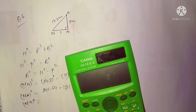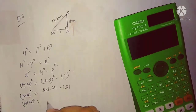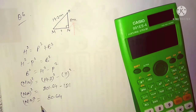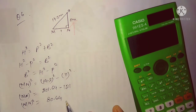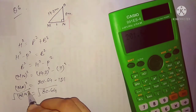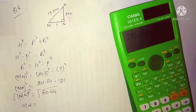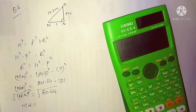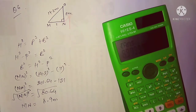MN squared equals 201.64 minus 121, which equals 80.64. To find MN, take the square root on both sides — the square root and square cancel each other. The square root of 80.64 equals 8.9. So MN equals 8.9 meters. This is your answer.